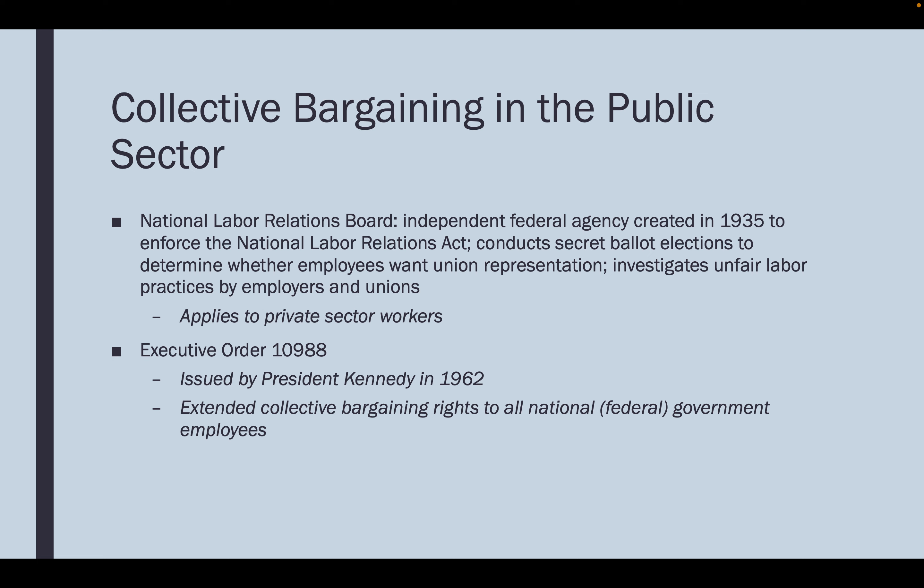Though the National Labor Relations Board was created in 1935, and the growth of unions in the private sector happened throughout the 1930s and into the 1950s, we don't really see public employee unions being active with collective bargaining rights until later. Public employee unions existed, but they didn't have nearly the powers because the legislation granting them the right to organize wasn't in place. So their power was limited in what they could do at the bargaining table.